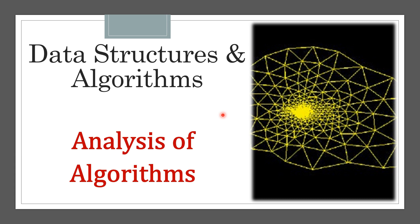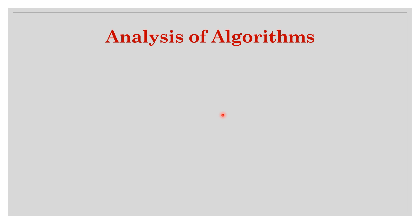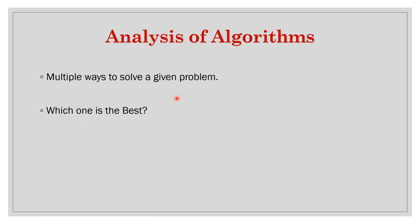Today we will start our discussion on analysis of algorithms. Why is analysis of algorithms required? Given a problem, we can solve it in multiple ways. For example, if we have a list of numbers, we can sort it using insertion sort, merge sort, or any other sort. If we had just a single choice, there would be no need for analysis, but since we have multiple choices, we have to pick the best one for a given scenario.